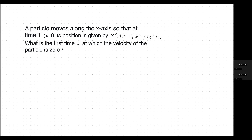So let's first read the question. A particle moves along the x-axis so that at the time t is greater than zero, its position is given by x of t is equal to 12e to the negative t power times sine of t. What is the first time t at which the velocity of the particle is equal to zero?